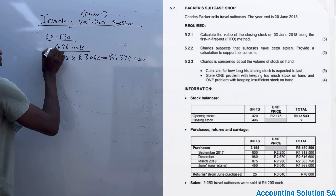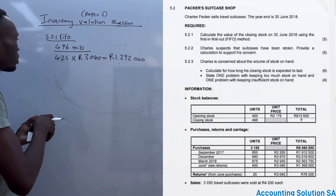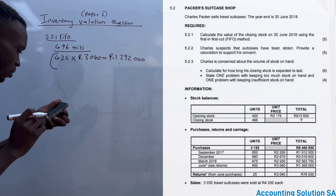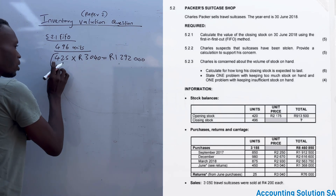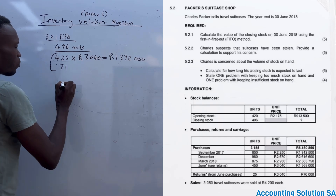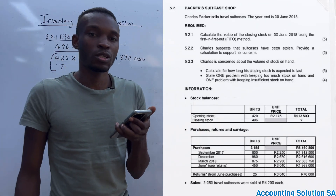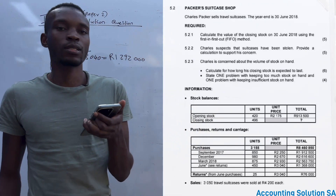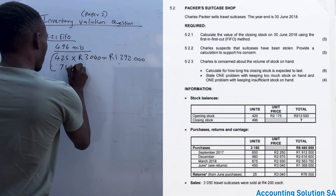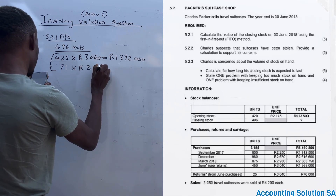To check how many units we still need to make up the 496, we take 496 minus 425, which gives us 71 units. These 71 units come from the batch purchased in March, which is the second-last purchase. We then multiply 71 by the March price.